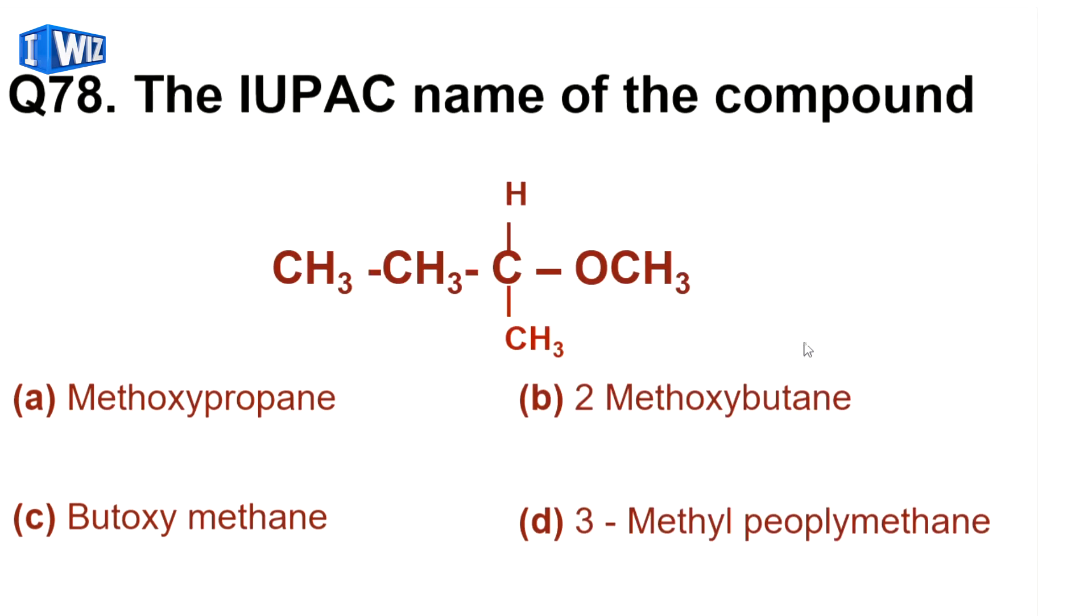IUPAC name of the compound - in this compound the longest chain you'll select, you'll start numbering from this side so that our substituents get lower numbers. This will become 2-methoxybutane, so B is the correct answer.